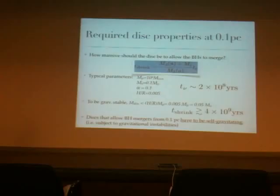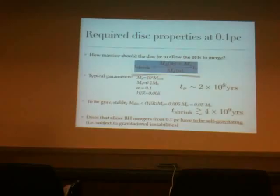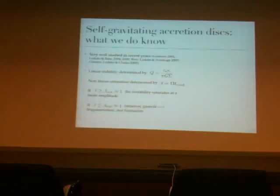We need disks that are at least of order (H/R) times the primary mass — essentially self-gravitating and subject to gravitational instability. Fortunately, in the last 10 years or so we have studied the dynamics of gravitationally unstable disks and now know a lot more than we used to, though not everything. The linear stability is determined by the Q parameter; the requirement to be linearly stable is equivalent to requiring that the disk mass is of order (H/R) times the primary.